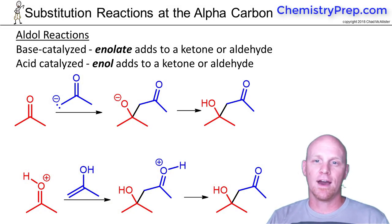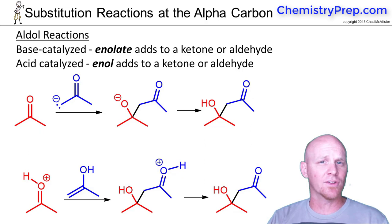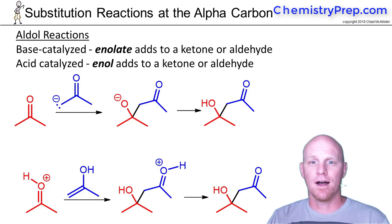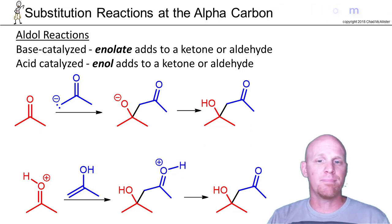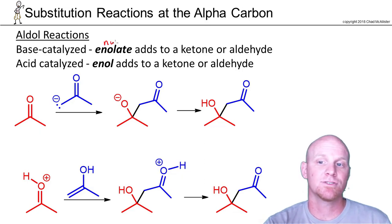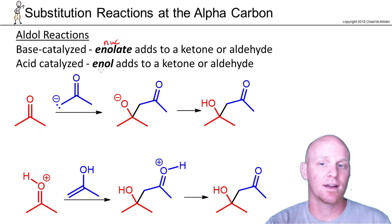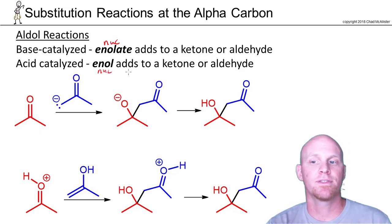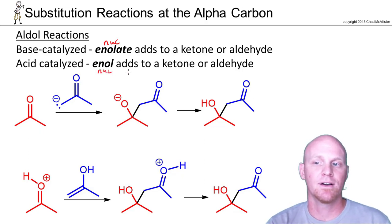Now we're going to take a long look at the aldol reaction, sometimes called the aldol condensation reaction. It can be both base-catalyzed and acid-catalyzed. Just like with alpha-halogenation, when it's base-catalyzed, it is the enolate ion that's going to be the nucleophile, whereas when it's acid-catalyzed, it'll be the enol that'll be the nucleophile.